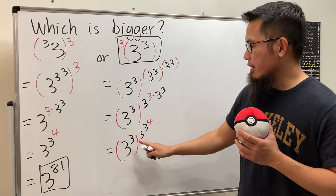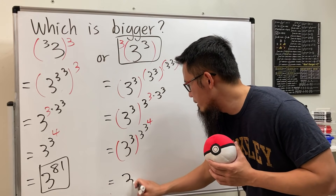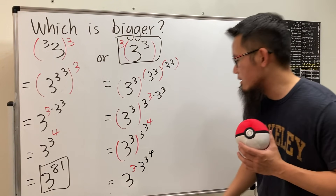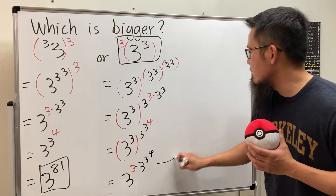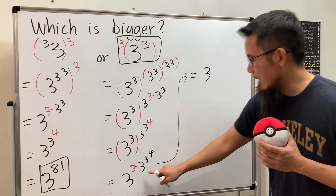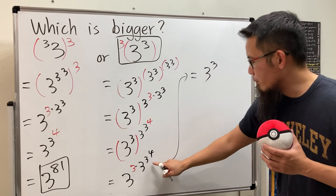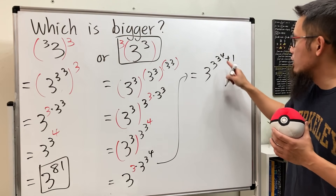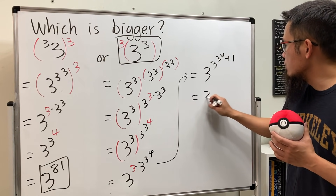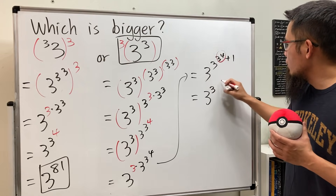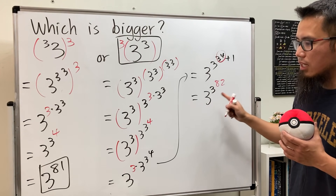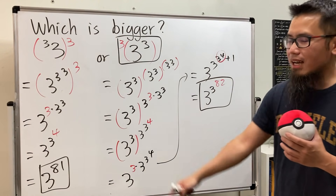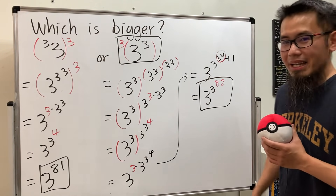Now I'm going to multiply this out together, so this right here means three, then three times three to the four. Adding the exponents together, this right here means three to the power of three to the four, plus one. Three to the four is 81, so this is three to the 81 plus one, which is three to the 82. This is definitely bigger than three to the 81!